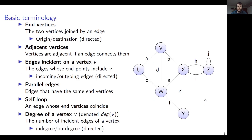Let's see the basic terminology. End vertices are the two vertices joined by an edge. For example, edge A has two end vertices, namely U and V, and edge F has two end vertices, W and Y. If an edge is directed, we call where it comes from the origin, and where it goes to the destination.